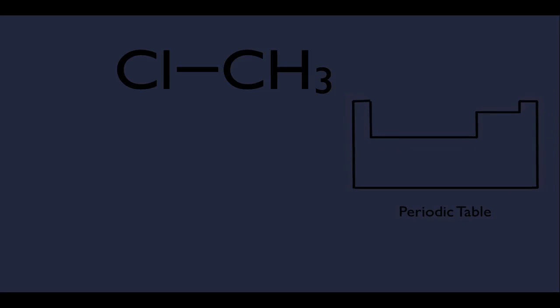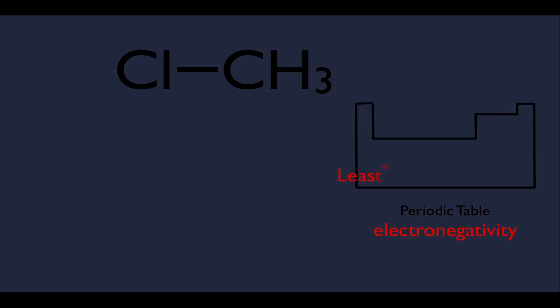Let's start with a molecule we're familiar with — an alkyl halide. You have a Cl and a methyl. I want to talk about the bond between the carbon and the chlorine atom. Going back to the beginning of organic chemistry, the periodic table gave us the trend of electronegativity — it increases as you move from the lower left to the upper right. Elements in the lower left were least electronegative, those in the upper right were most electronegative. Carbon is about in the middle, and Cl is to the right of it.